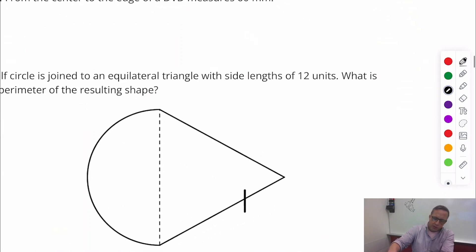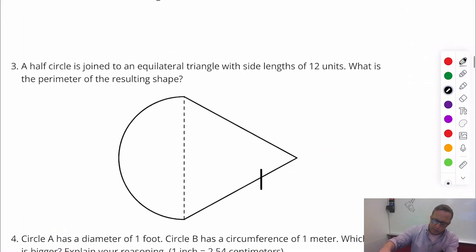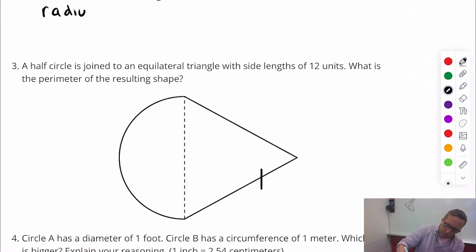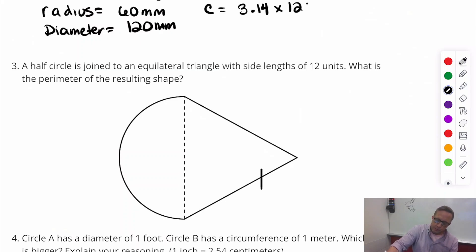From the center to the edge of a DVD, that's radius. So the radius is 60 millimeters. So that means the diameter is double that, 120 millimeters. The circumference is going to be diameter times 3.14, so 3.14 times 120, and our circumference is 376.8 millimeters. Sounds like a lot, but it's really just 37 centimeters.